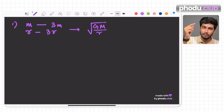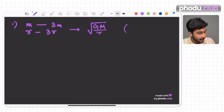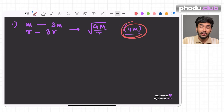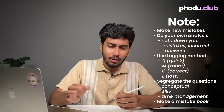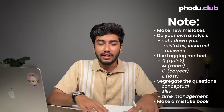If you took more time on a question — say 4 minutes — write that down and remind yourself not to do it again in upcoming mocks. After noting everything, it is very important to revise your mistakes notebook at regular intervals so you remember every mistake you've made and don't repeat them.